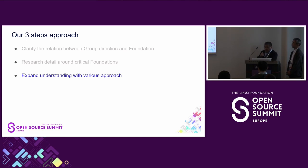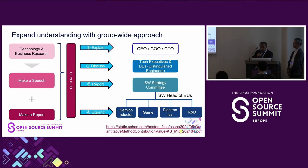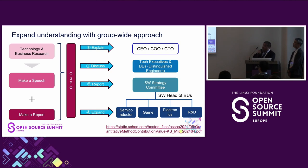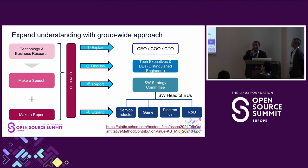Let's move on to the third step: expanding understanding with a barriers approach. As an OSPO, we conduct technology and business research first, then discuss with technical executives and distinguished engineers. We report the results to the Software Strategy Committee and explain it to C-level executives. Then we spread the report to all related business units, incorporating feedback from technology executives and C-level executives. This approach was already explained at Open Source Summit North America 2024.